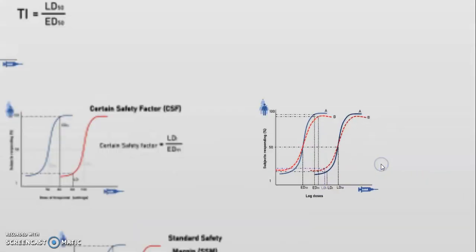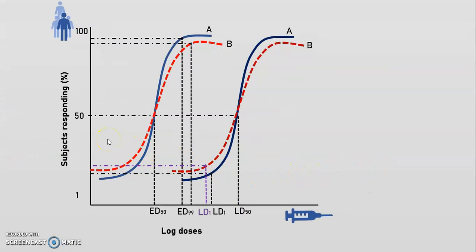Consider another example where two drugs, A and B, may have the same therapeutic index because of identical ED50 and LD50 values. But a completely different picture of relative safety emerges when we compare drugs A and B on the basis of their certain safety factor. Without doubt, drug A is more safe than drug B because ED99 is much lesser in drug A compared to LD1 in drug A. Hence, better judgment of relative safety can be made by utilizing the extremes of the log dose-response curve, by considering ED99 and LD1 of any drug.